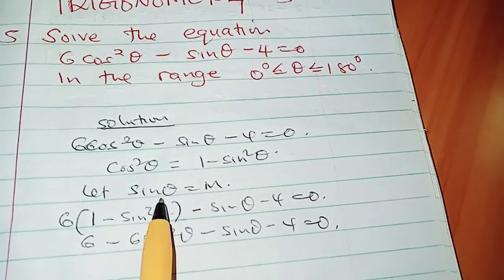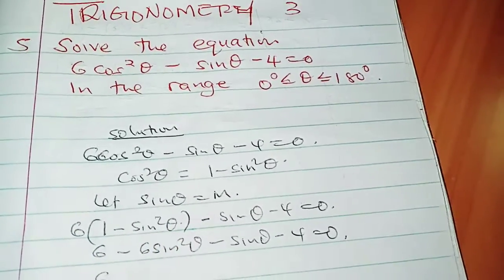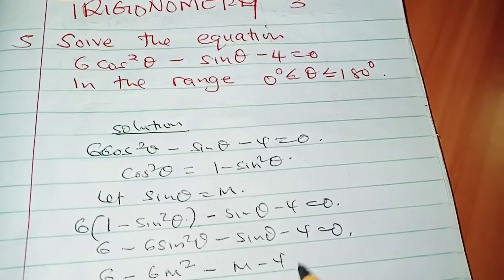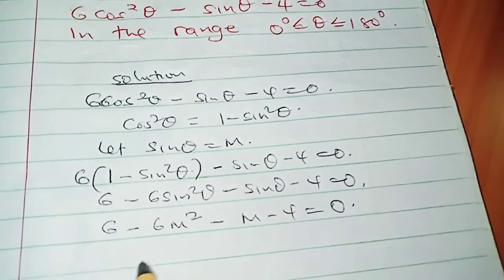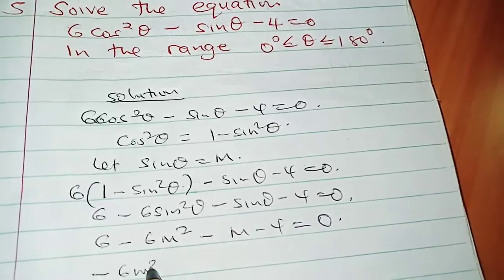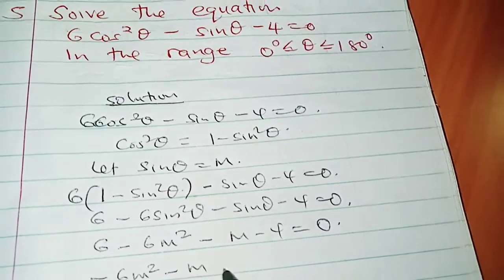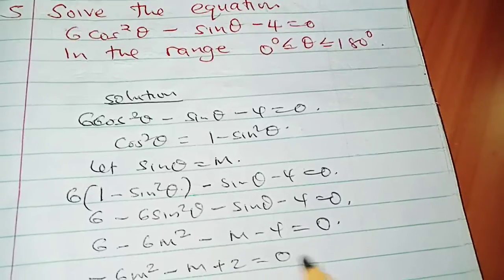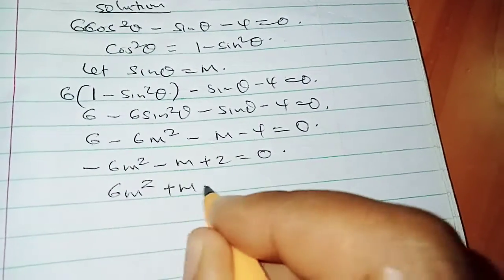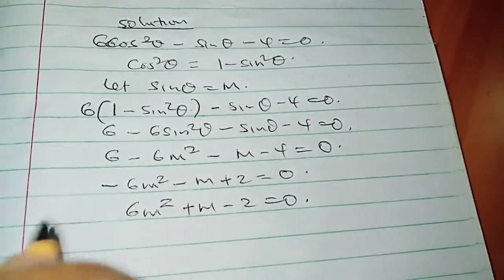But now we say sinθ equals to m. So rearranging, we have -6m² - m + 2 = 0, which is the same as 6m² + m - 2 = 0. So this is a quadratic equation that we need to solve.